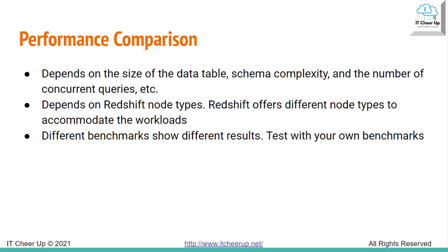Performance is tricky across all data warehouse solutions. It depends on the size of the data warehouse, data table, schema complexity, and the number of concurrent queries. Different benchmarks show different results. I suggest you test with your own benchmarks in all three systems to compare performance for your use case. Take advantage of AWS Redshift's 2-month free trial, GCP's $300 credits with its free tier account, and Snowflake's trial account with free credits. I did include two different performance results links in my previous AWS Redshift vs. GCP BigQuery post showing the different stories, including 2020 test results among cloud data warehouse solutions.